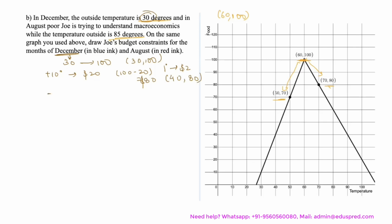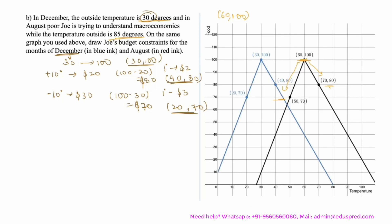If he cools the room, reducing the temperature by 10 degrees, cooling costs $3 per degree, so 10 degrees costs $30. This leaves $100 minus $30 = $70 to spend on food. Starting from 30 degrees and reducing by 10 degrees, he reaches 20 degrees, giving the point (20, 70). Plotting the three December points — (30, 100), (40, 80), and (20, 70) — and joining them gives the budget constraint for December.